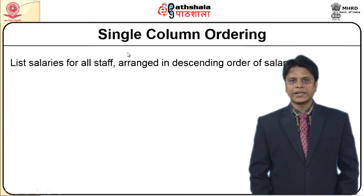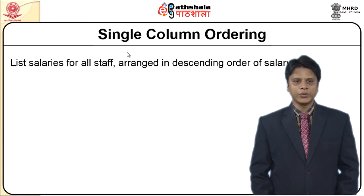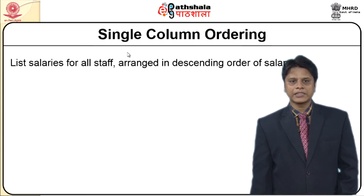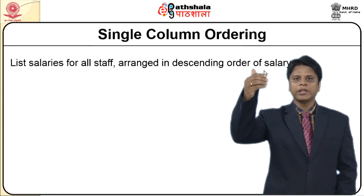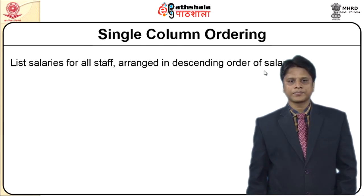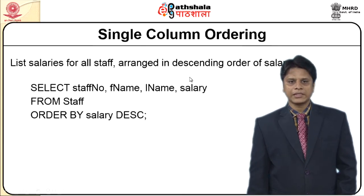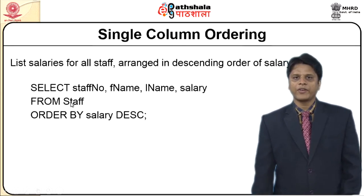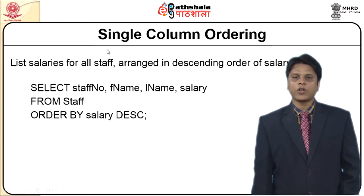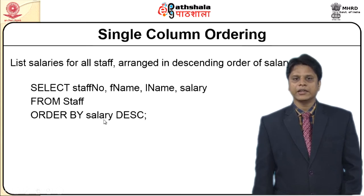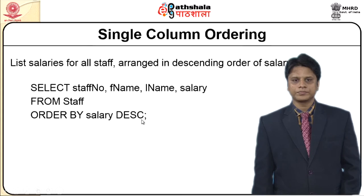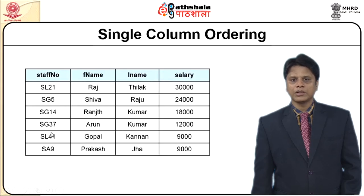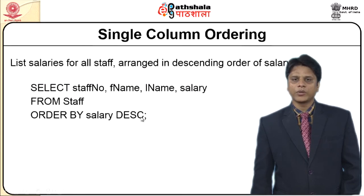Another operator introduced in the syntax is ORDER BY. List salaries for all staff arranged in descending order of salary. I write: SELECT staff_number, first_name, last_name, salary FROM staff ORDER BY salary DESC. DESC is the descriptor for descending. That will list all values from the staff table with salary in descending order. Likewise, I can also indicate ASC for ascending, which will list all values in ascending order.